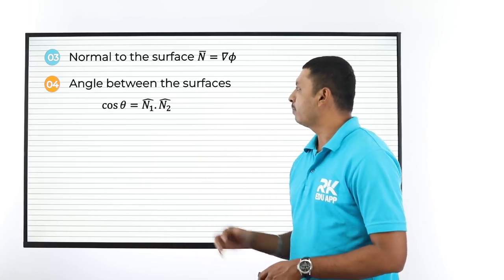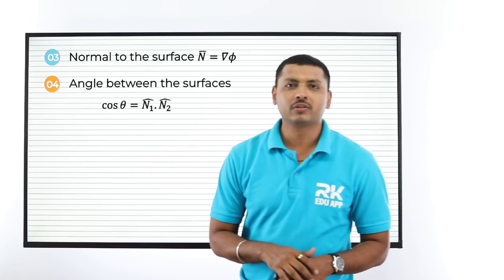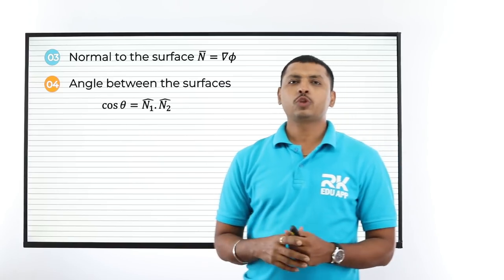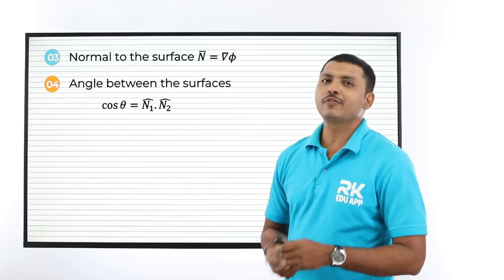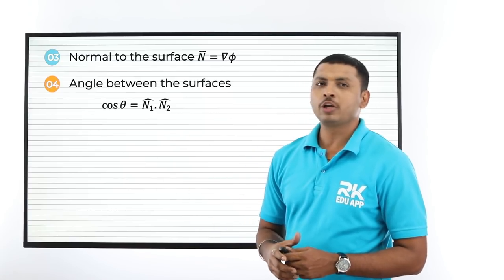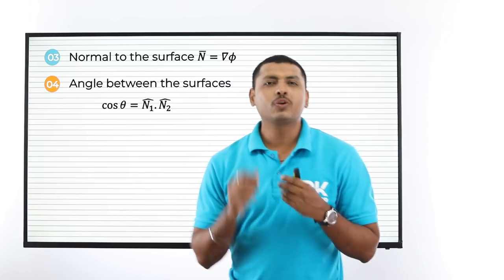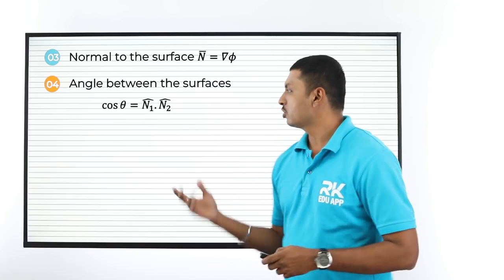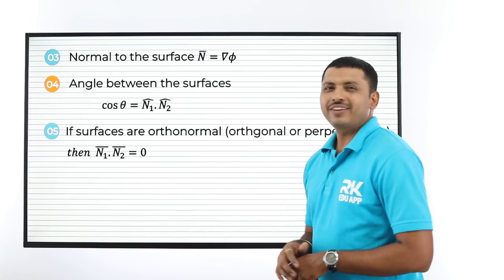The gradient is called the normal to the surface. For the angle between two surfaces, the formula is cos θ = n̂₁ · n̂₂, where cap denotes the unit vector. The unit vector is vector upon its magnitude. If two surfaces are perpendicular (orthogonal), then the formula is n̄₁ · n̄₂ = 0 for perpendicular surfaces.